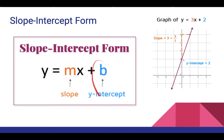m is the slope and b is the y-intercept. So if we have a line y equals 3x plus 2, the slope is 3, which means for every one change in x, there is a positive 3 change in y — y increases by 3 as x increases by 1. Our y-intercept is y equals 2, because this is where our graph intersects the y-axis at x equals 0.